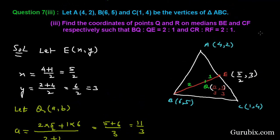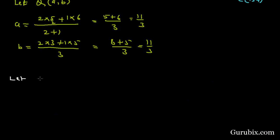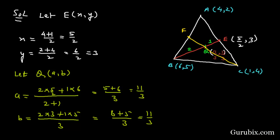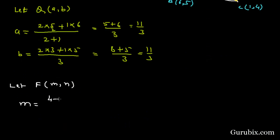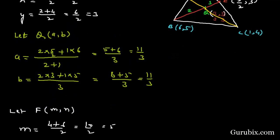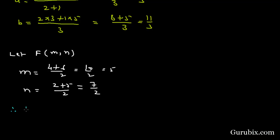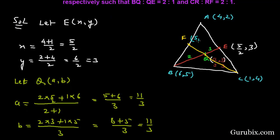Now we shall move to the other median, that is CF, from point C to side AB. Here we have a point F, whose coordinates we let be (m, n). Since F is the midpoint of AB, the coordinates of F will be: x = (4 + 6) over 2, which is 10 over 2, which is 5; and y = (2 + 5) over 2, which is 7 over 2. Therefore the coordinates of F are (5, 7/2).